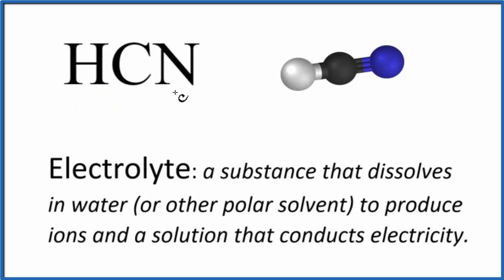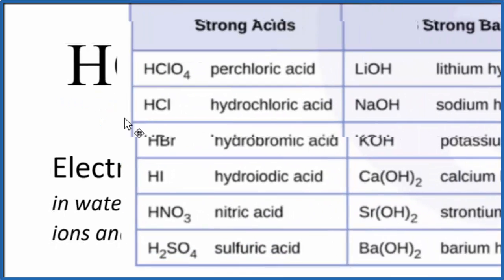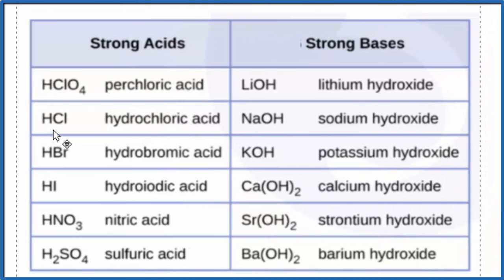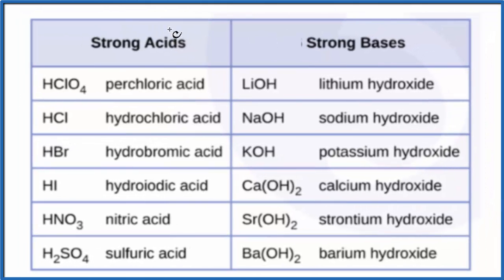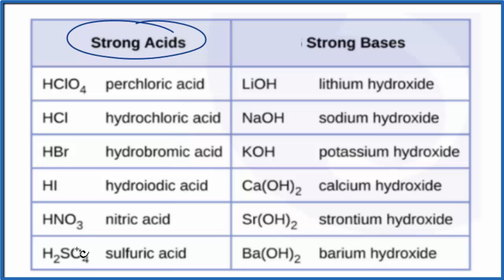We can look at this table of common strong acids to get an idea. As we look at the strong acids here, we don't see HCN on our list, so we can assume that it's going to be a weak acid. Since it's a weak acid, it's going to be a weak electrolyte.